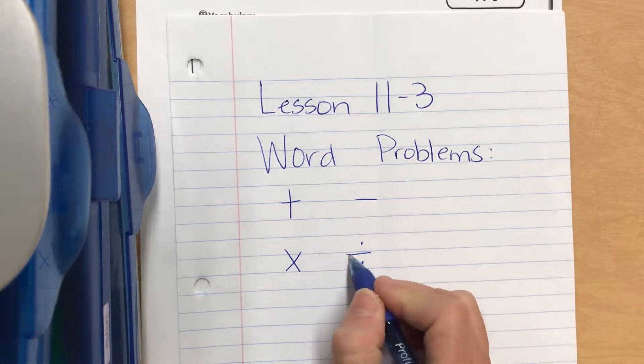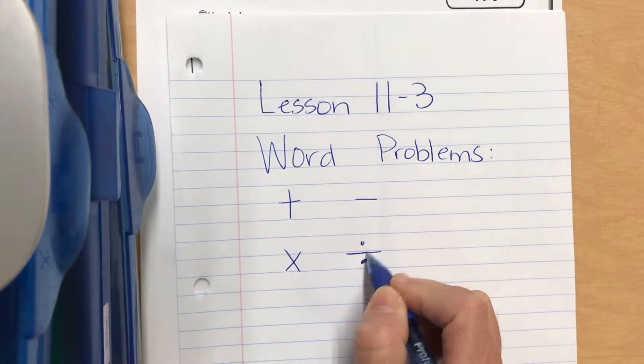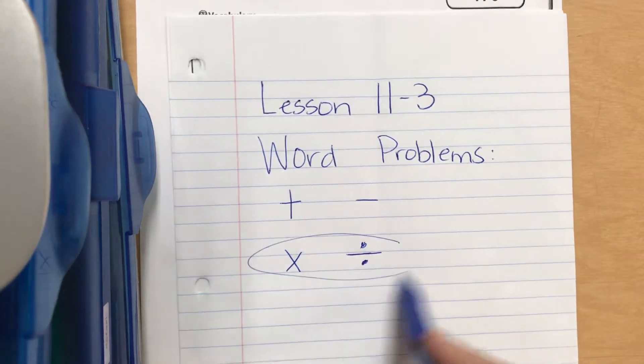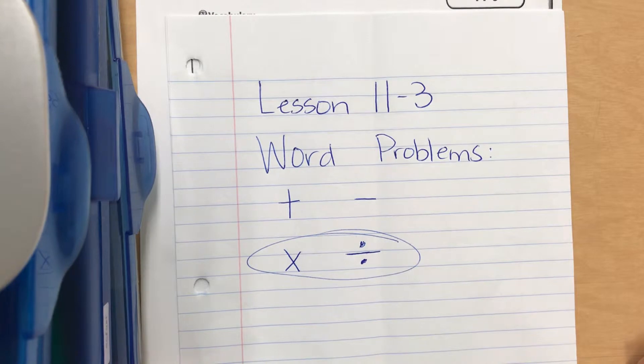If we have a word problem that has two different operations in it, we have to know which one to do first. It is always going to be multiplication or division first. They're more complicated than addition and subtraction.